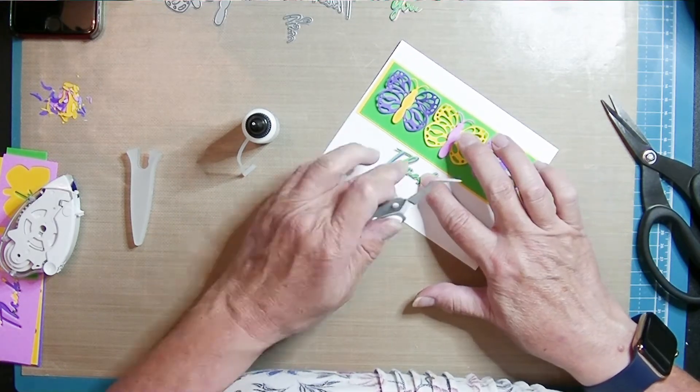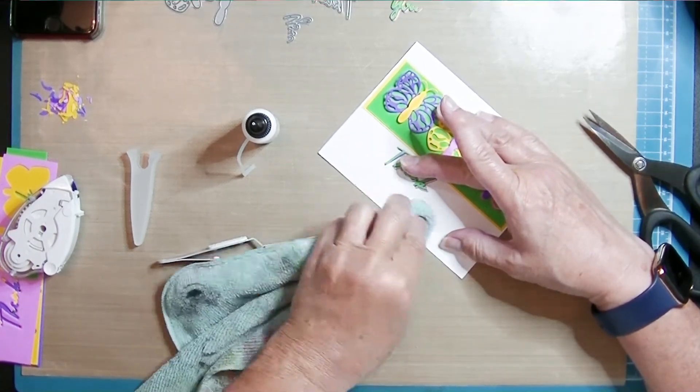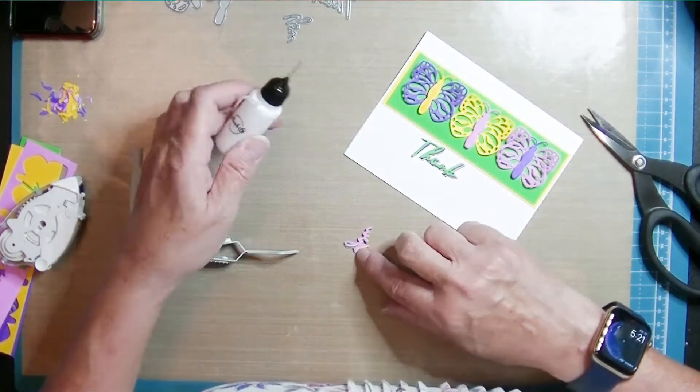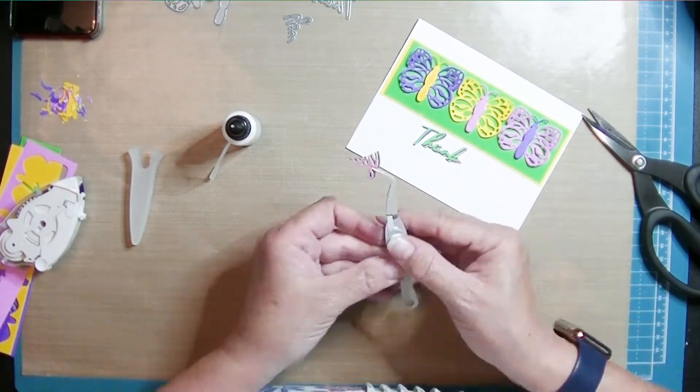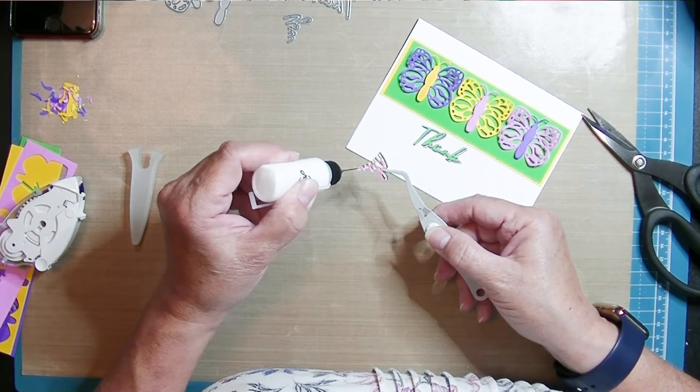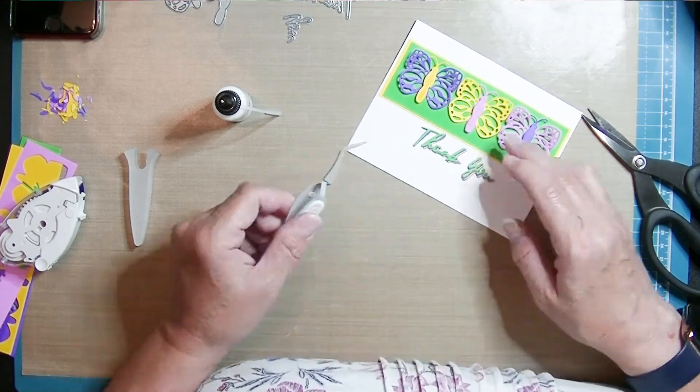This art glitter glue is really nice. I've only had it for a week or two and I love it. Like it wipes up nicely. It also dries clear. So you can't see any residue. If some smushes out and you miss it and don't get it wiped up when it's wet. And that is going to complete the card.